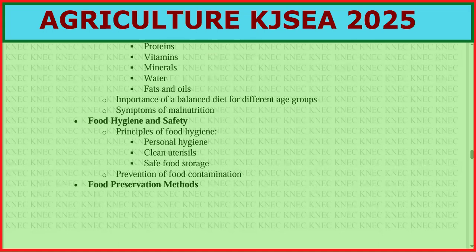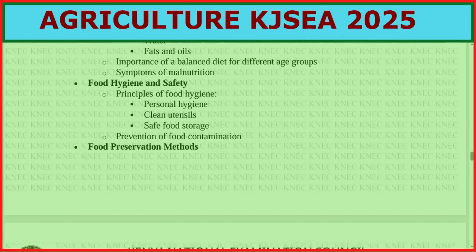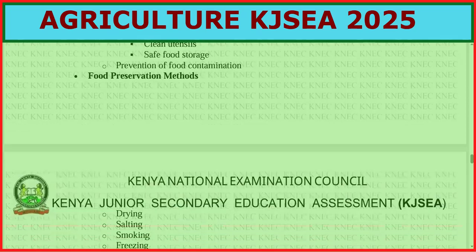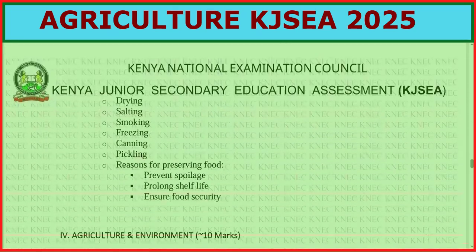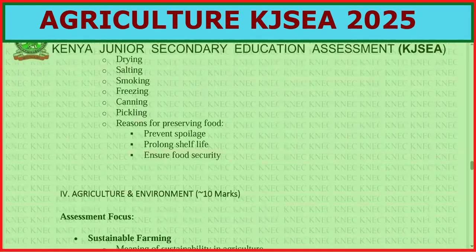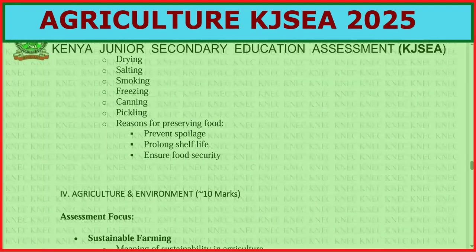Cover prevention of food contamination and safe food storage. Food preservation methods — both traditional and modern — include drying, salting, smoking, freezing, canning, and pickling. Reasons for preserving food include preventing spoilage, prolonging shelf life, and ensuring food security.